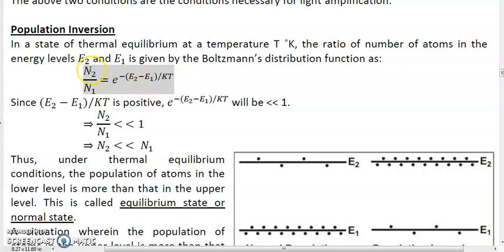What is n2, what is n1? n2 is the number of atoms in the upper level, n1 is the number of atoms in the lower level. Basically n2 by n1 is called as a ratio of populations in the upper and lower levels. What is the meaning of population? Number of atoms in a given level is called as a population of that level. The population of the upper level e2 is n2. Similarly, the population of the lower level is n1.